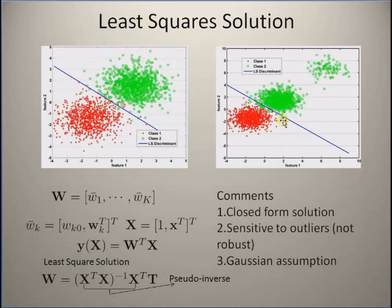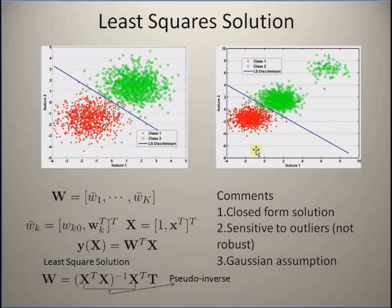However, in the second case when we have outliers in class two — data points that look different from the main class two points but still belong to the class — the classifier is not very robust. We can clearly see that some of the green circles are on the wrong side of the discriminant function.